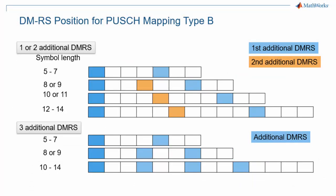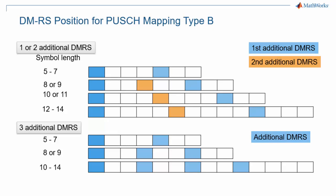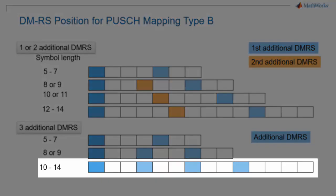Here we have the exact same view but for PUSCH mapping type B. The main difference here is that the first DMRS symbol is always the first symbol of the PUSCH allocation. You can have up to four DMRS symbols as soon as the allocation is at least 10 symbols long.